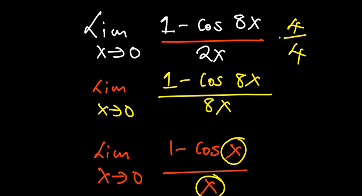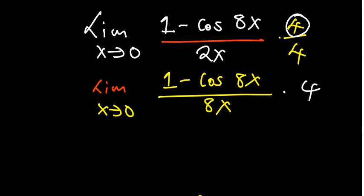Now, notice that we are still remaining with a 4, right? So that 4 can become the coefficient of the limit. So you have a 4 and then you have the limit as x approaches 0. So you now have 1 minus cosine 8x over 8x.